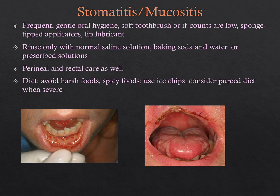Stomatitis or mucositis is inflammation of the mouth and mucous membranes. Avoid glycerin swabs and alcohol-containing mouthwashes like chlorhexidine. Instead, rinse with normal saline, baking soda and water, warm neutral liquids, or other prescribed solutions. Avoid harsh or spicy foods; use ice chips or popsicles. Consider a pureed diet when severe, since mucositis may prevent eating due to pain. Note that stomatitis and mucositis can also occur in the perineal or rectal area, so consider a peri-bottle to assist with toileting.